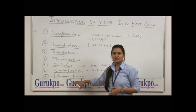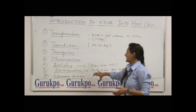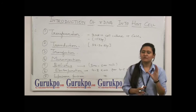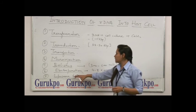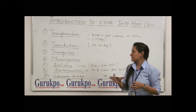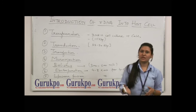Seventh is Liposome Fusion. In Liposome Fusion, liposome is a kind of small spherical vesicle made up of phospholipids. And this can be used to fuse the liposome with other cells so that DNA can be transferred to the other cells.